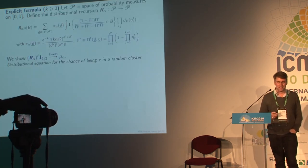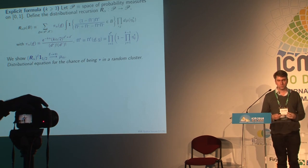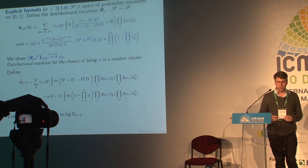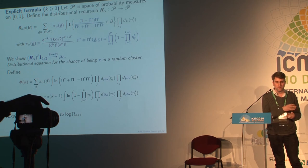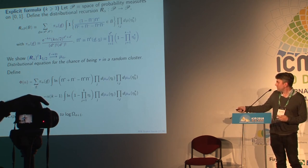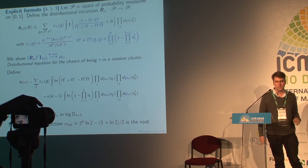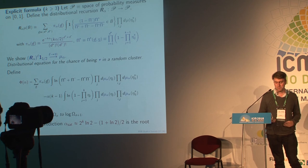For random KSAT this is the fixed point equation that it needs to satisfy. You find the fixed point, then work out how the partition function changes when you add in a new variable — the log of that. You arrive at a formula for the expected change in log of the number of clusters, so φ should be the exponential growth rate of the number of clusters. The prediction for the satisfiability threshold is just when this is zero — the point where you go from the number of solutions growing exponentially to shrinking exponentially.